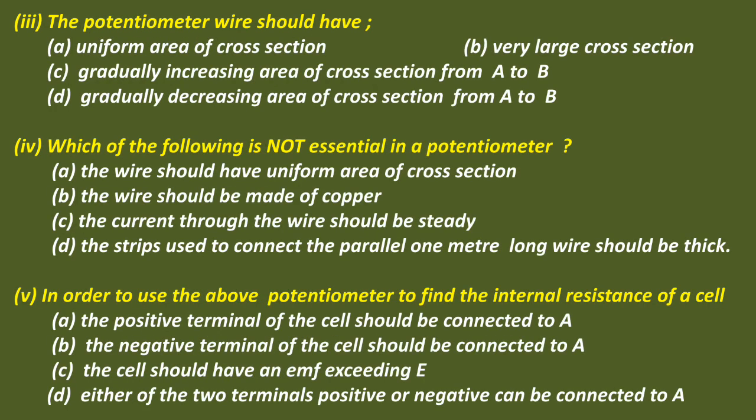Question 3: The potentiometer wire should have — uniform area of cross section, very large cross section, gradually increasing area of cross section from A to B, or gradually decreasing area of cross section from A to B. The correct answer is A — uniform area of cross section.